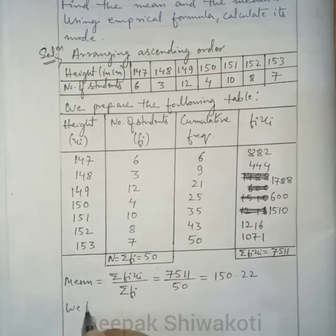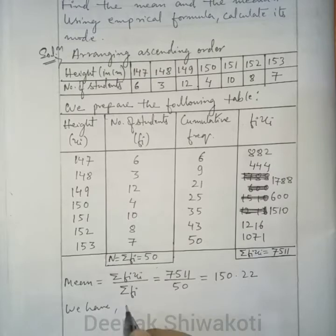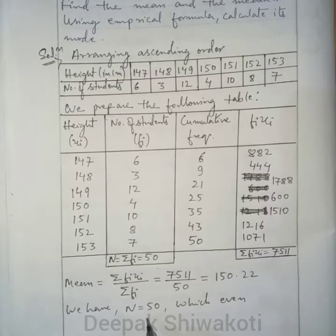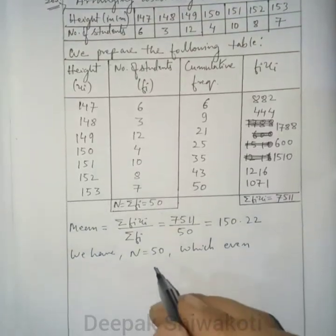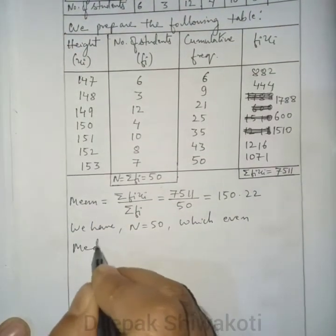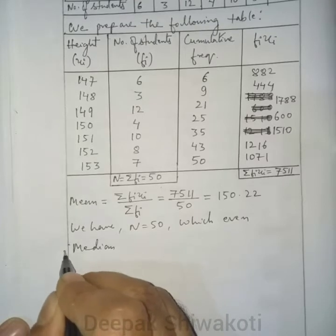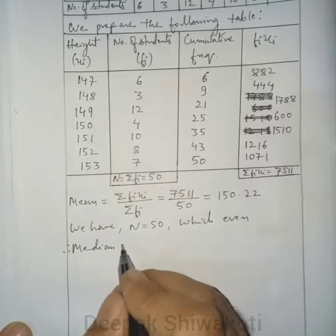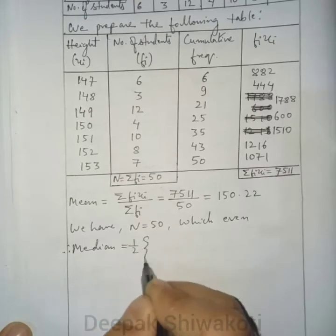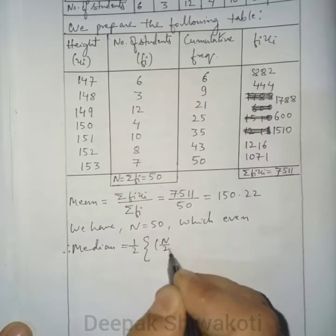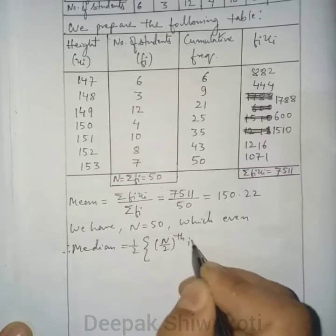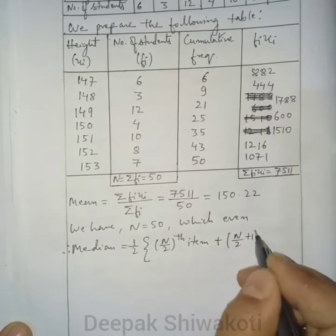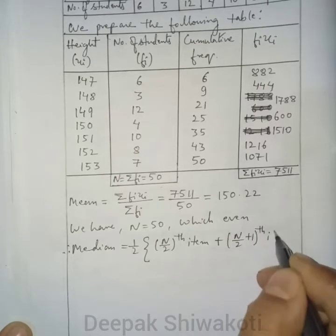Now, n = 50, which is even. To find the median when the number of observations is even, we use the formula: median = ½ × (n/2-th item + (n/2 + 1)-th item).